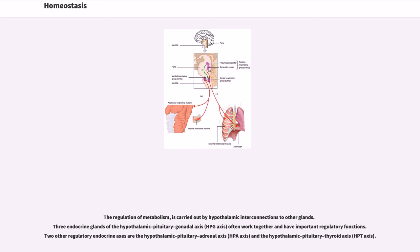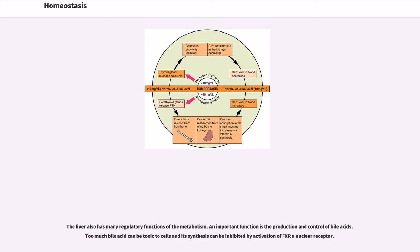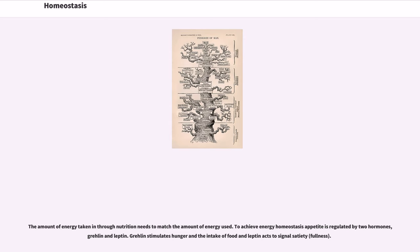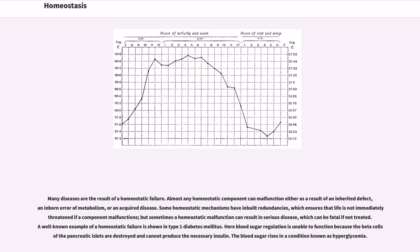The regulation of metabolism is carried out by hypothalamic interconnections to other glands. Three endocrine glands of the hypothalamic-pituitary-gonadal axis often work together and have important regulatory functions. Two other regulatory endocrine axes are the hypothalamic-pituitary-adrenal axis and the hypothalamic-pituitary-thyroid axis. The liver also has many regulatory functions of the metabolism, including the production and control of bile acids. Too much bile acid can be toxic to cells, and its synthesis can be inhibited by activation of FXR, a nuclear receptor. At the cellular level, homeostasis is carried out by several mechanisms including transcriptional regulation that can alter the activity of genes in response to changes. The amount of energy taken in through nutrition needs to match the amount of energy used. To achieve energy homeostasis, appetite is regulated by two hormones — ghrelin and leptin. Ghrelin stimulates hunger and the intake of food, and leptin acts to signal satiety.